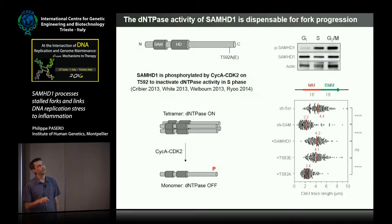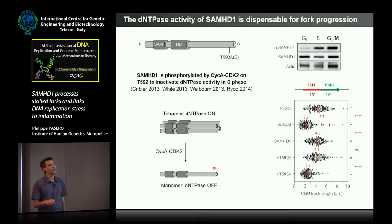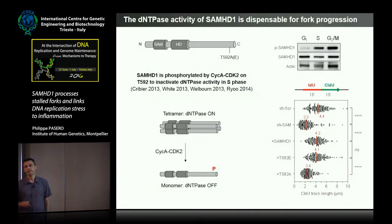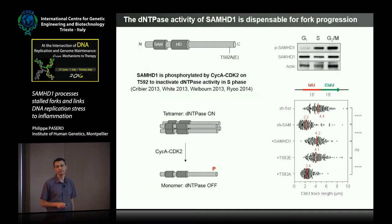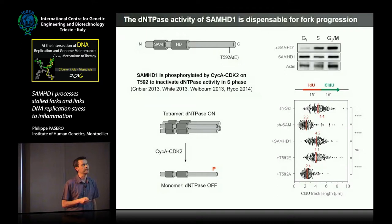What we did was first check that SAMHD1 is indeed phosphorylated as cells enter into S-phase on this residue, then we depleted SAMHD1. You see again that the forks are slower in its absence. We complemented with a full-length protein and rescued completely the normal fork progression. We complemented with either a phosphomimetic mutation or a non-phosphorylatable version, and only the phosphomimetic version rescues normal fork progression. This clearly shows that the function promoting normal fork progression depends on phosphorylation by Cyclin A/CDK2 and is independent of the dNTP regulation function.